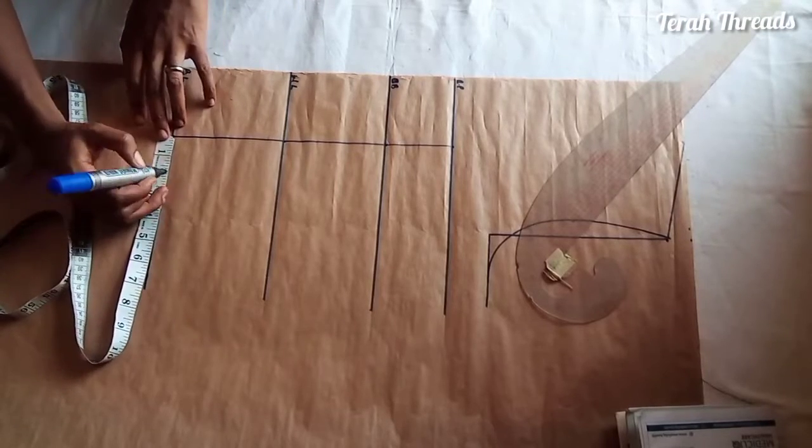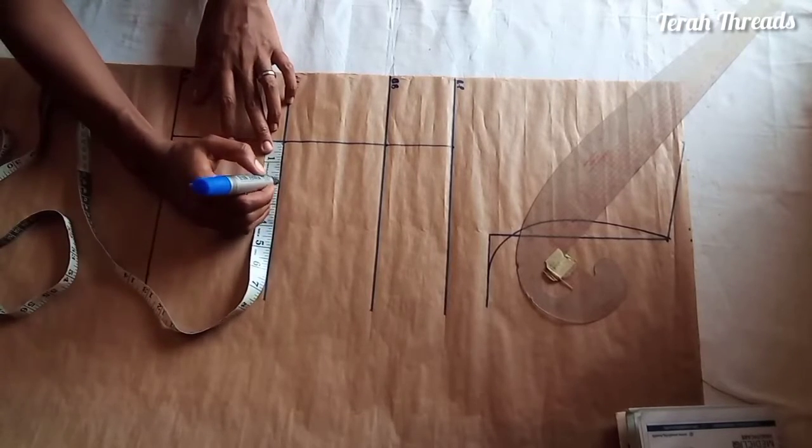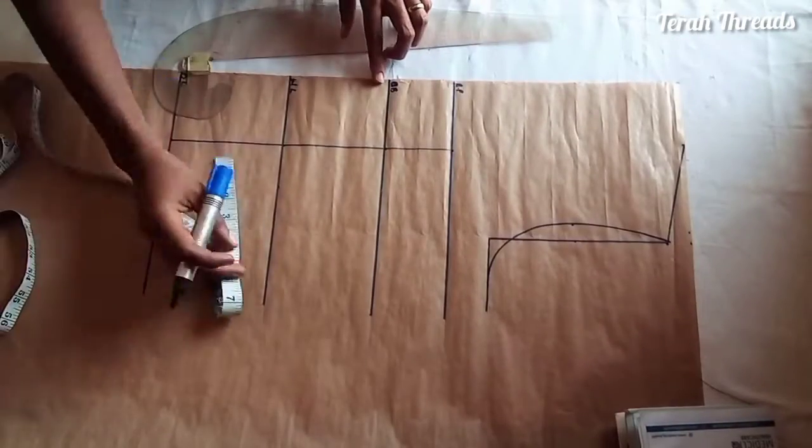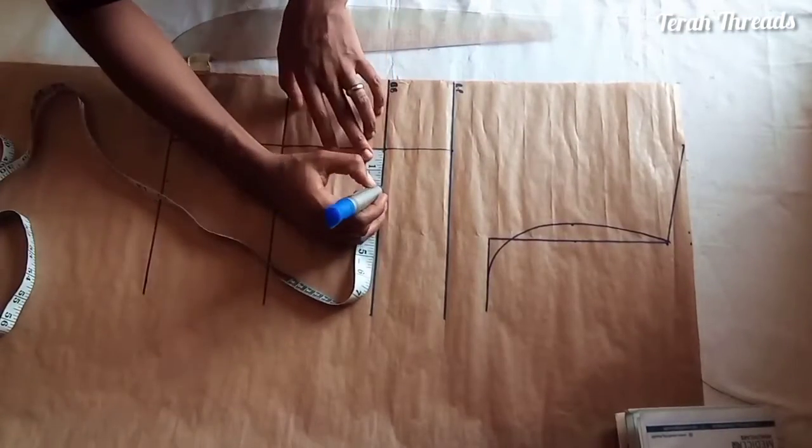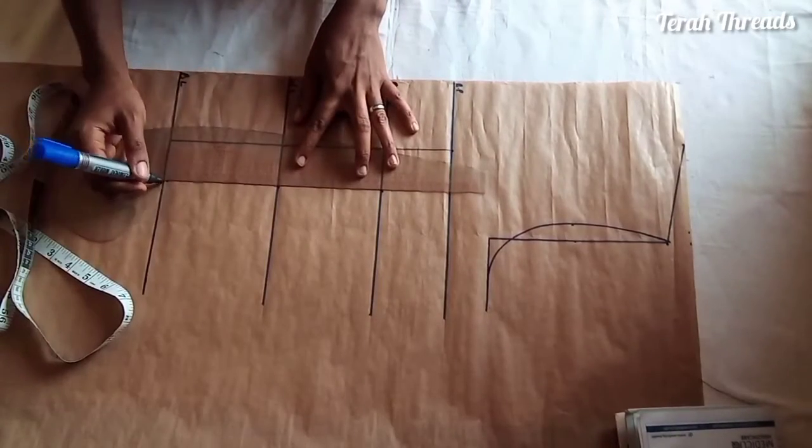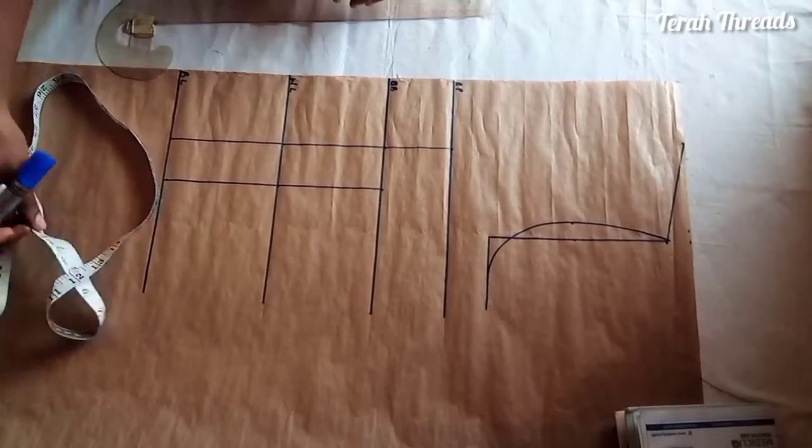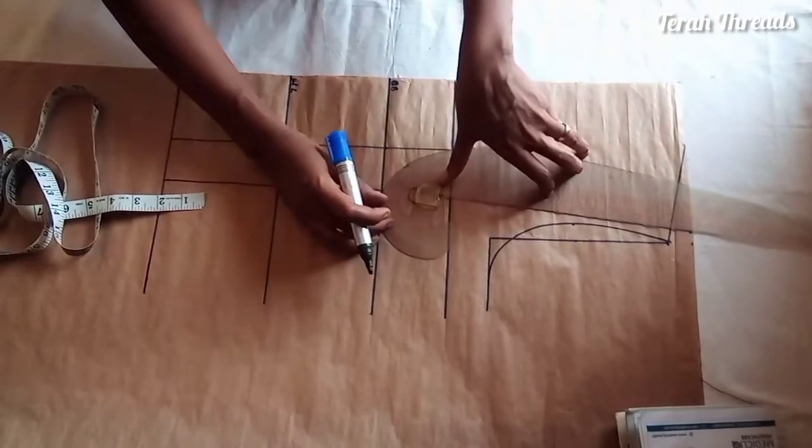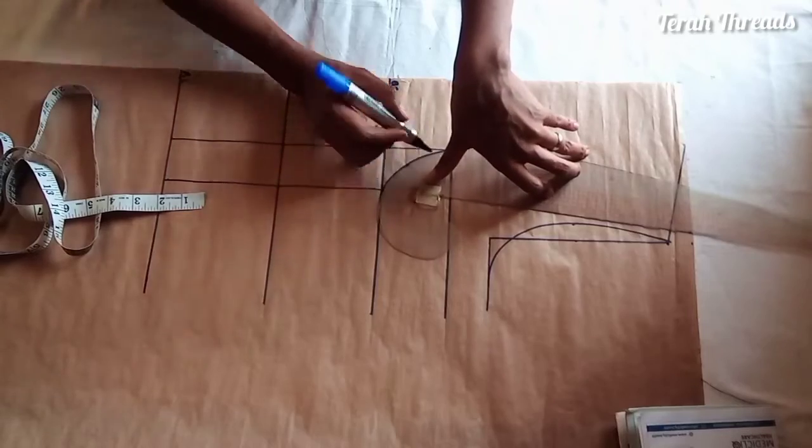I mark this 3.5 down to the basque waistline and connect it with a straight line. For my princess dart bodice, I'll be marking two inches on just one side, the side that is close to the armhole, towards the side seam. Then use my curve ruler to connect the two inches down to the 3.5.